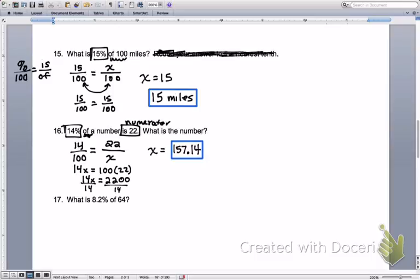And the last one. Once again, we are given the percent, so we can automatically put 8.2 over 100 because that's the percent. This time we are given of, and of always goes in the denominator, so we're looking for that number in the numerator.